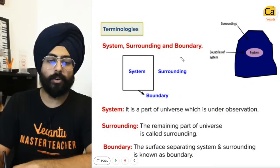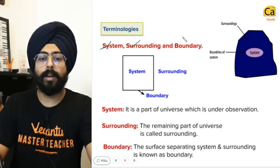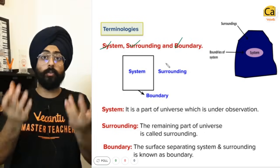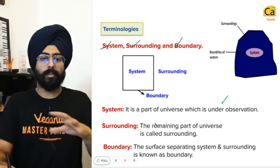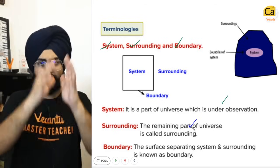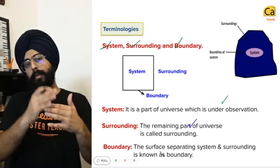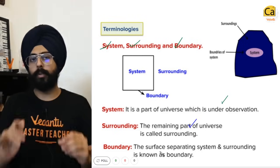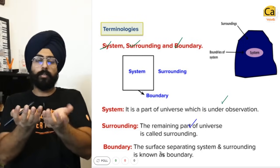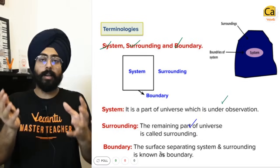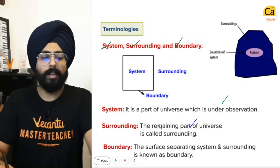First of all, the terminologies of thermodynamics: system, surrounding, universe, and boundary. The system is the part of the universe which is under observation. Surroundings are whatever is not a part of the system — the remaining part — and the system is separated from the surrounding via the boundary. The boundary could be imaginary, or it could be a real boundary like a box, so the walls of the box would be the boundary.